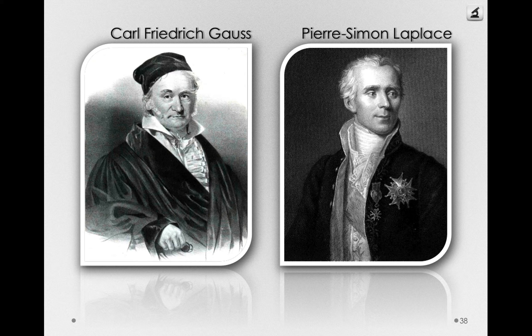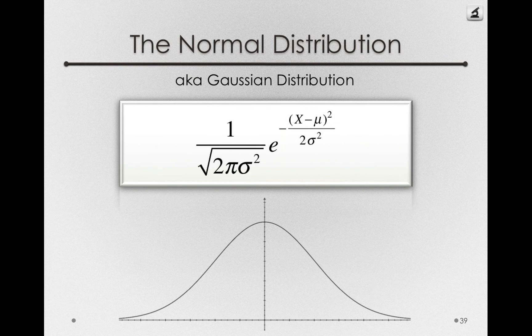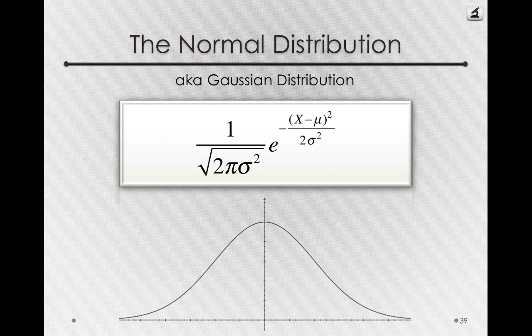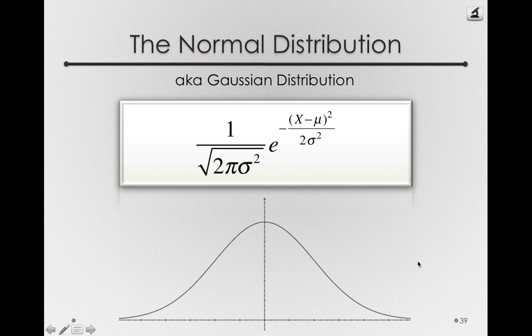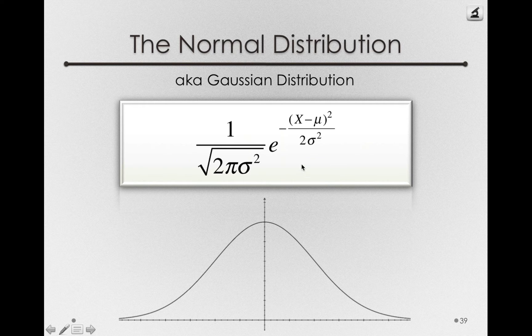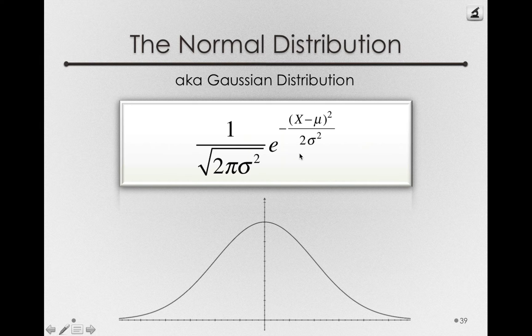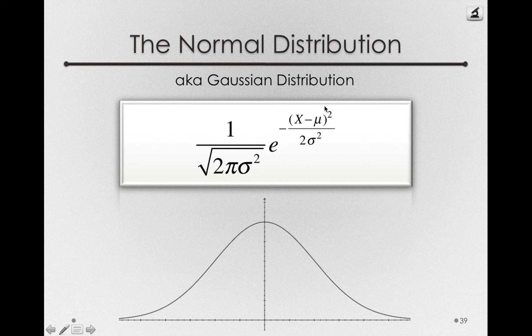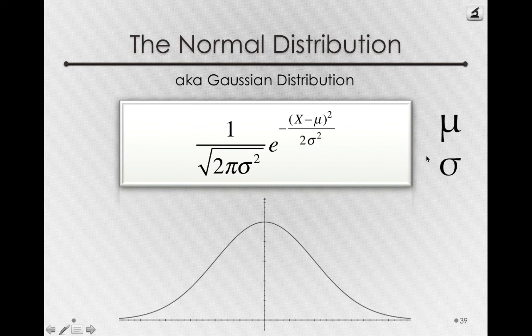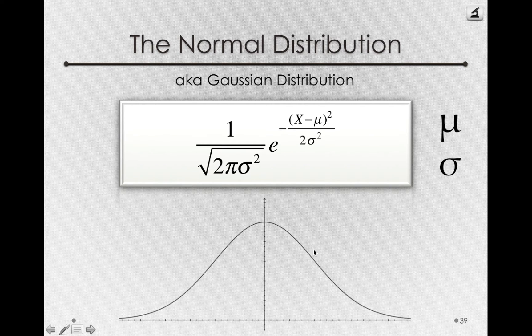Now, what these two titans described was the normal distribution, also known as the Gaussian distribution. Now, you don't need to know this formula, but I do want you to notice something about it. It's one of a special class of exponential functions. That's because we're taking Euler's number to a power here. But in this function, we only need two specific values to draw the normal distribution.